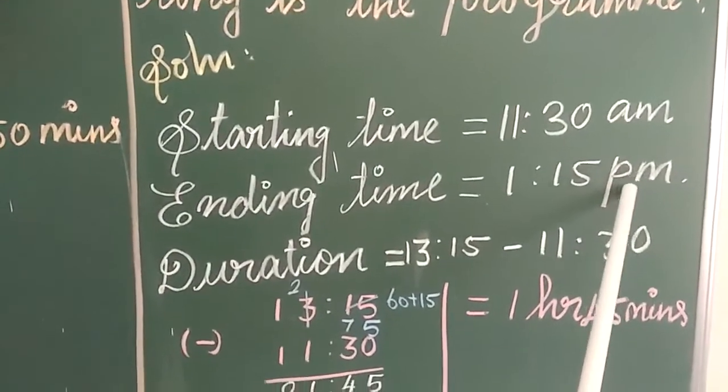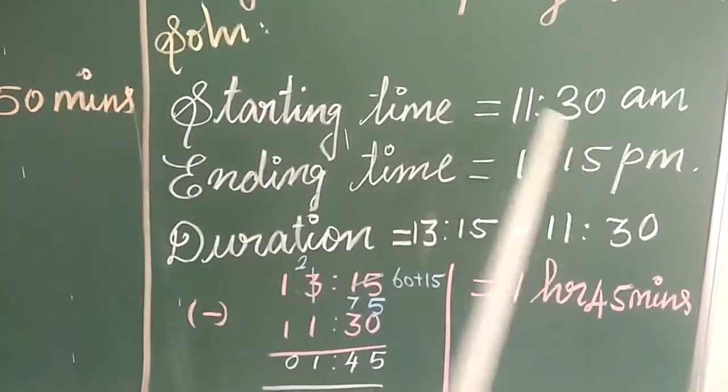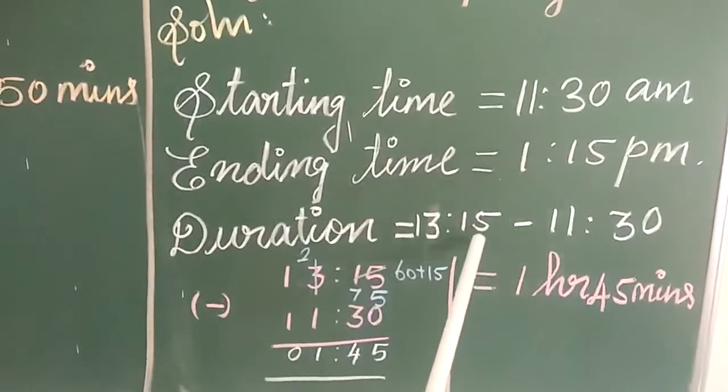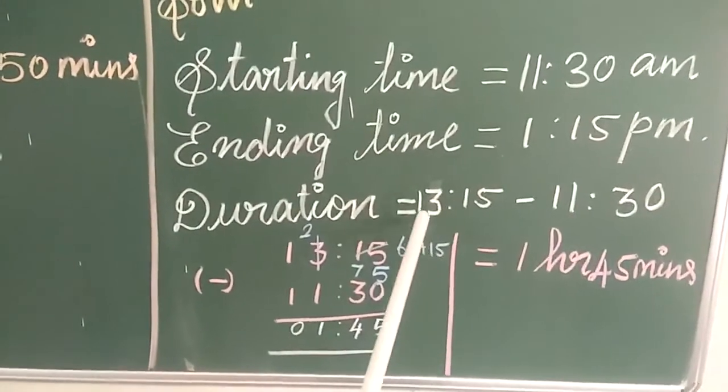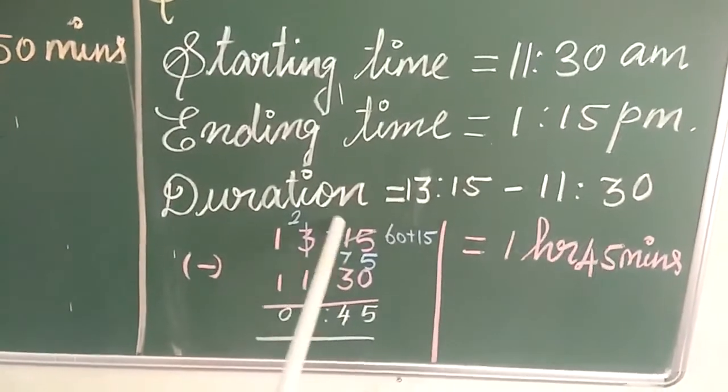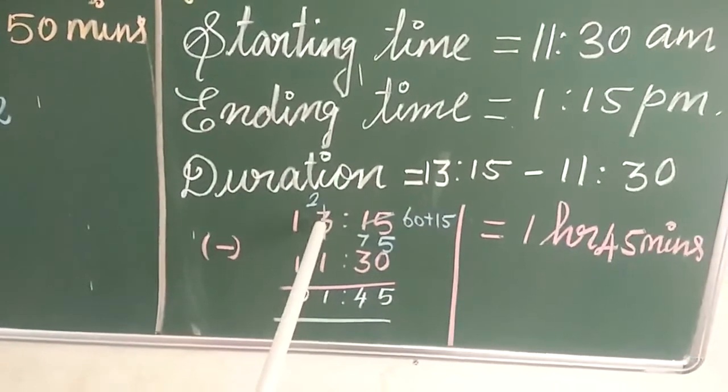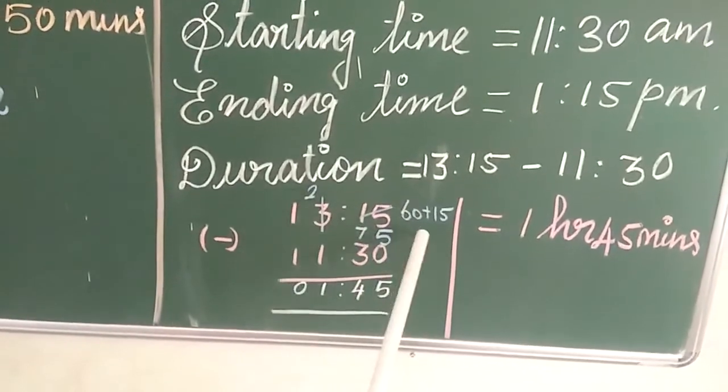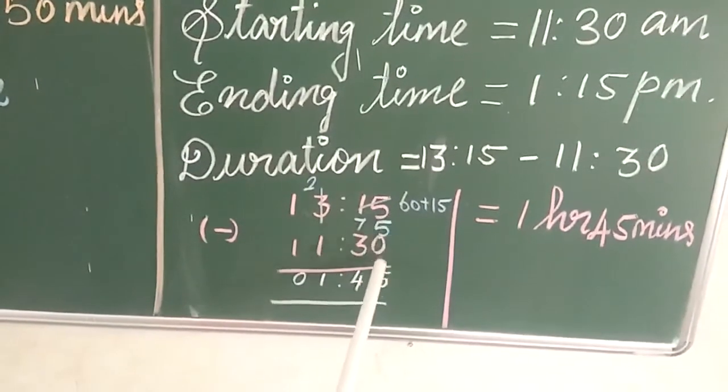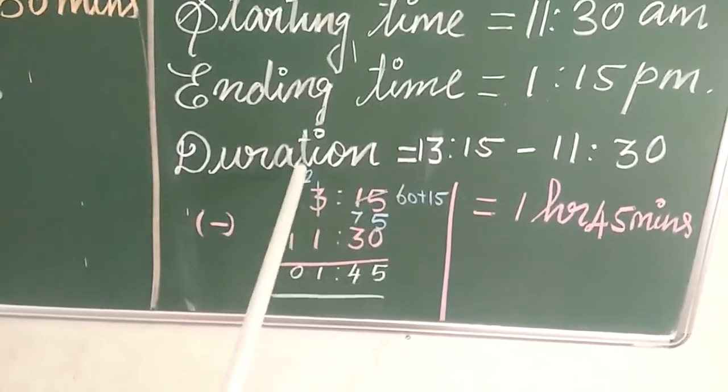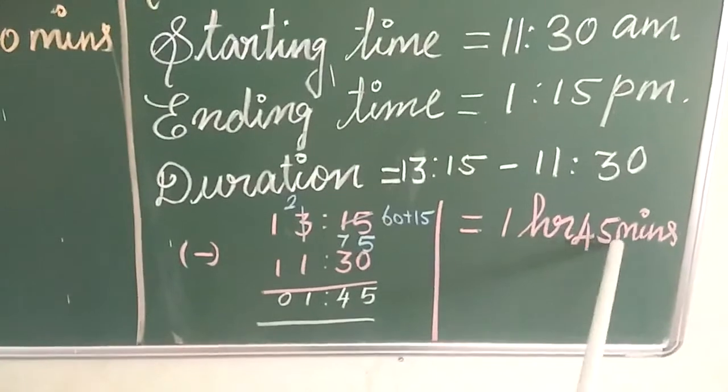Solution: starting time is 11:30 AM and ending time is 1:15 PM. AM is up to 12, PM is after 12. So 13, 15 minus 11, 30. 1 hour is equal to 60 minutes. The duration is 1 hour 45 minutes.